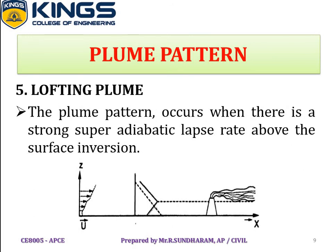The lofting plume occurs when there is a strong super-adiabatic lapse rate above a surface inversion layer. In this pattern, diffusion is rapid in the upward direction but does not penetrate the inversion layer downward. The emission will not reach the surface, making this a somewhat better plume pattern. This figure shows the plume pattern of the lofting plume.